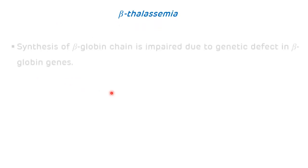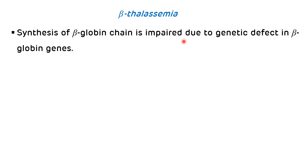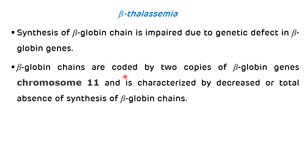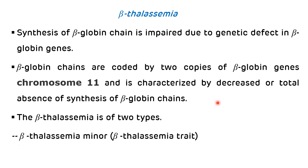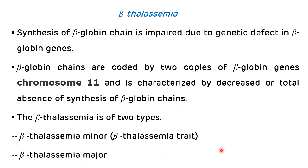Now, beta thalassemia. Synthesis of the beta globin chain is impaired due to genetic defects in the beta globin genes. Beta globin genes are coded by two copies located on chromosome number 11, as compared to the four copies of alpha globin genes on chromosome 16. It is characterized by decreased or total absence of beta globin chain synthesis. Beta thalassemia is divided into two major types: beta thalassemia minor, also known as beta thalassemia trait, and beta thalassemia major.